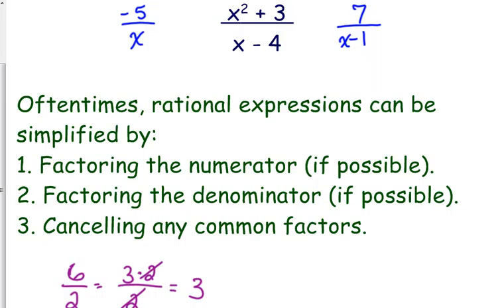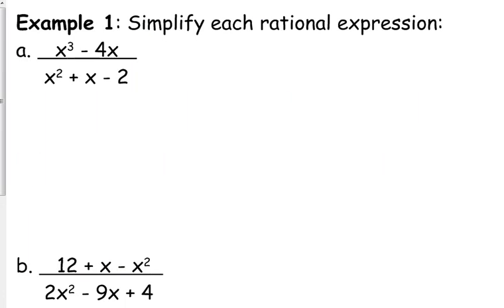For example, 6 over 2. Y'all can tell me that's 3. But the reason why it's 3 is because you can split 6 into factors 3 times 2. And because that's multiplication right there, you can cancel those 2s. If that were a plus sign in the top, you cannot cancel those. 3 plus 2 over 2 is not equal to 3. 3 plus 2 over 2 is 5 halves. That's what we're getting ready to do with these variables.